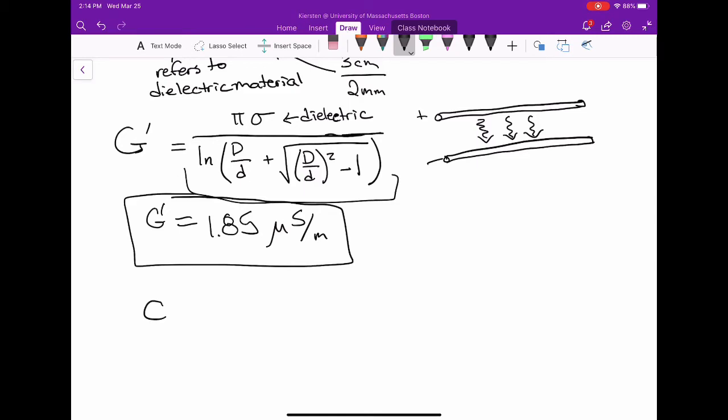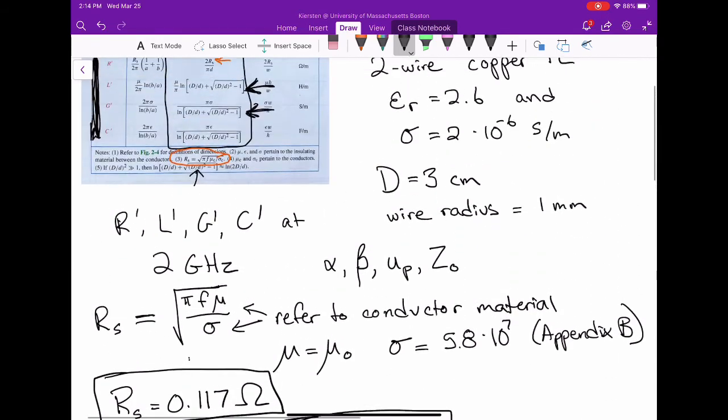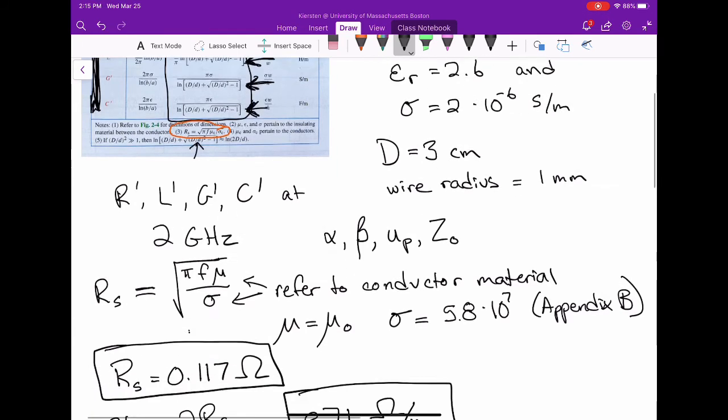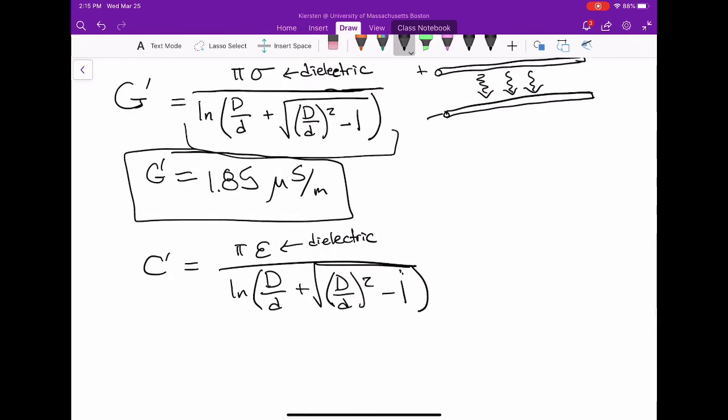The last thing for problem 2.2 is the capacitance per unit length. That equation looks a lot like the conductance per unit length. It's π times ε divided by the natural log of all that stuff. The dielectric relative permittivity is 2.6, but this ε value is 2.6 times the permittivity of free space.